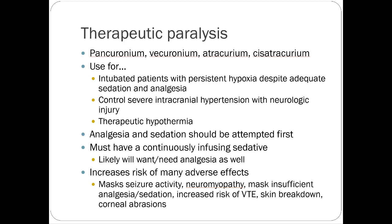Therapeutic paralysis for hypothermia patients uses continuous infusions of a neuromuscular blocking agent. Cisatracurium is almost always preferred — easier to titrate than alternatives. For therapeutic hypothermia patients, the standard regimen is fentanyl drip, midazolam drip, and cisatracurium drip. The fentanyl provides pain relief that can't be assessed in a paralyzed patient, and fentanyl plus midazolam together provide synergistic sedation.